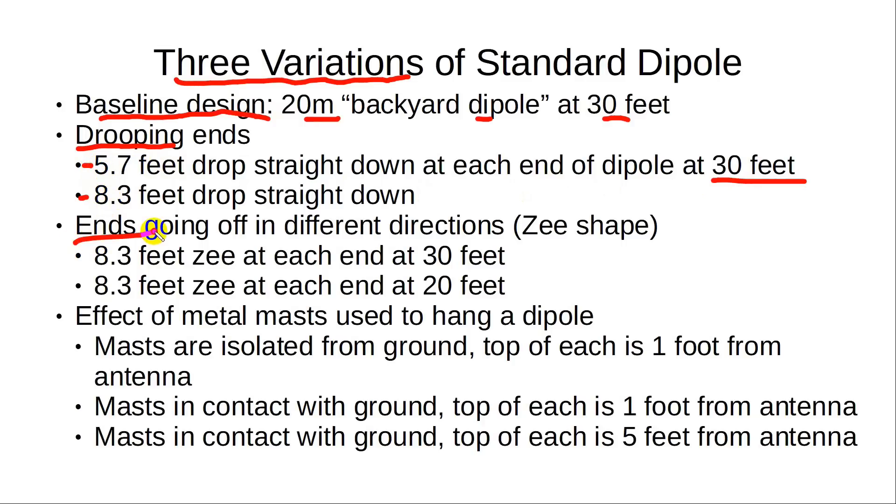Then we're going to look at the ends going off in other directions. We'll do one at 30 feet, one at 20 feet. And then the masts, first isolated from ground, second in contact with the ground, and another one that's further away from the antenna. So let's dive in.